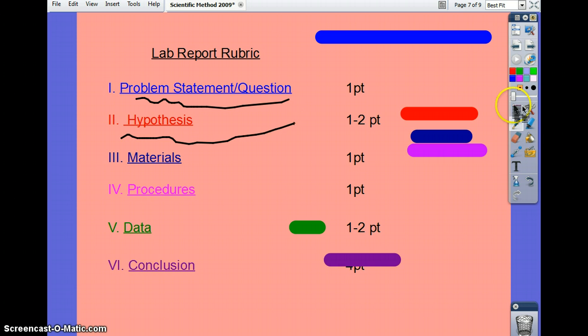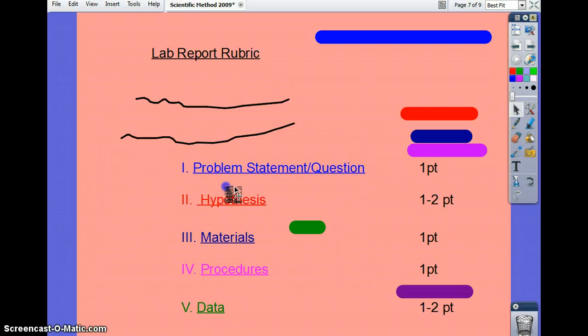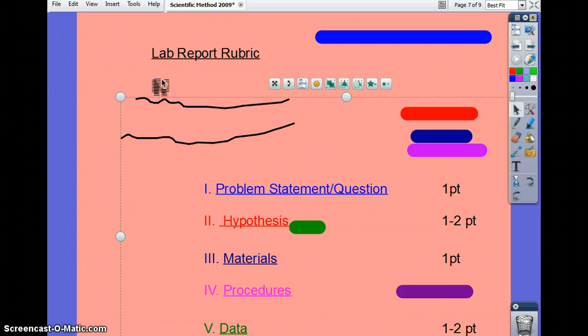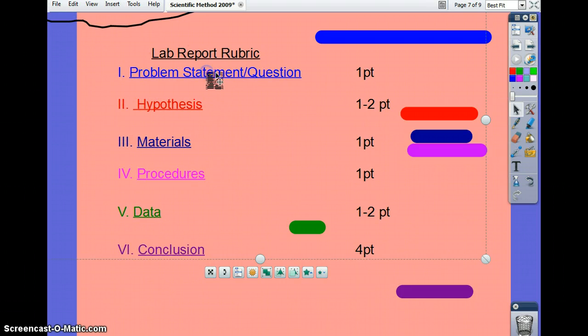When you get to data is where the points start to increase. And if you notice, I left hypothesis and data points fluctuating. If the hypothesis is worth one point, the data will be worth two. In some labs, I'm going to eliminate all of these first steps. And we're just going to go straight here. And it's going to be four points for data or six points for data, four points for whatever. I readjust the rubric, depending on the lab. Okay?